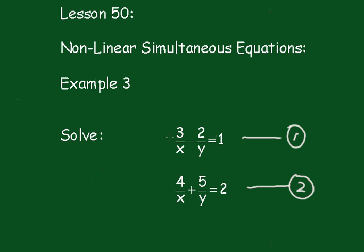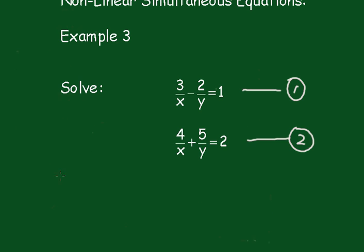Now we'll use the elimination method. What I'll do here, I'm going to eliminate the y's, so to do that I'll multiply equation 1 by 5, and we get this result here. So that's 1 multiplied by 5.